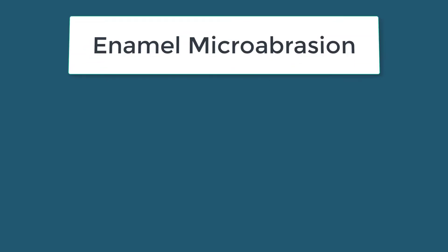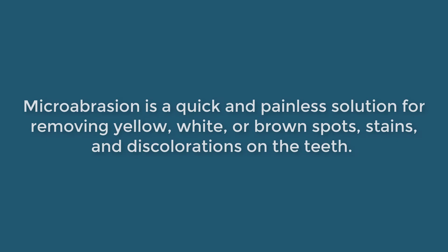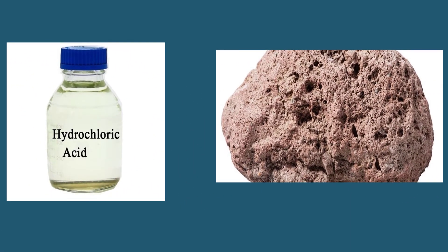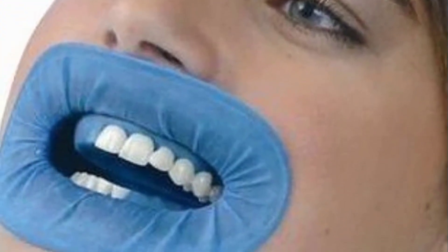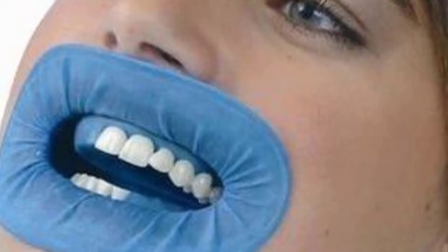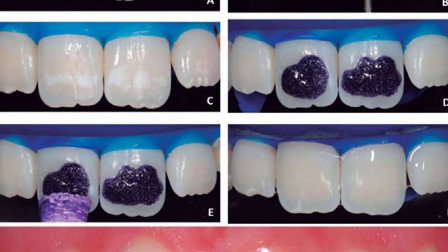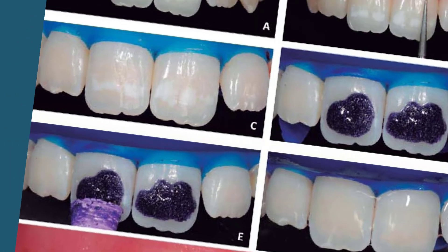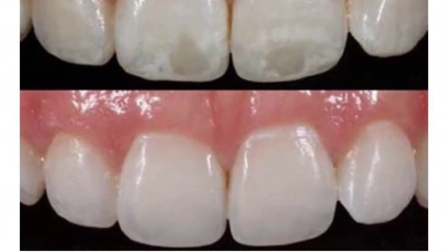Treatment options. Enamel microabrasion is a quick and painless solution for removing yellow, white, or brown spots, stains, and discolorations on the teeth. This procedure uses hydrochloric acid and pumice to gently remove layers of tooth enamel, removing the stains. Before the procedure begins, the teeth being treated are isolated with a rubber dam to protect the gums from the acid and pumice materials. The microabrasion materials are then gently rubbed onto the surface of the tooth, either manually or using a very slow speed rubber cup. After a few layers of enamel are removed, the mixture is rinsed from the teeth and the results evaluated. This process may be performed repeatedly until the desired results are achieved.